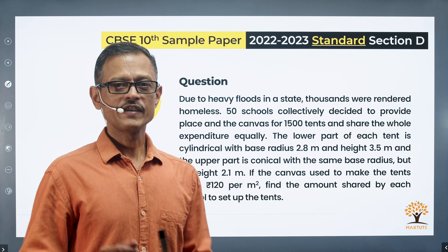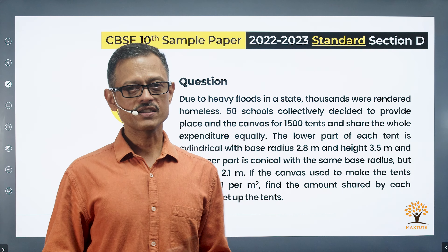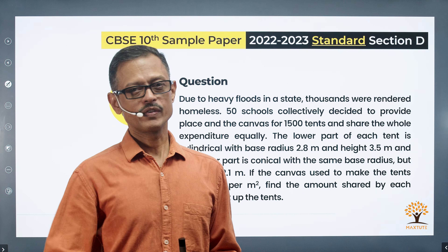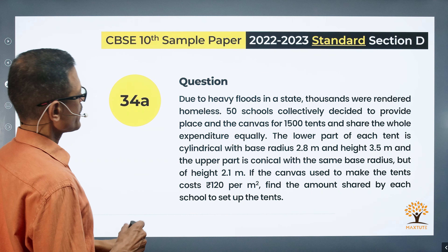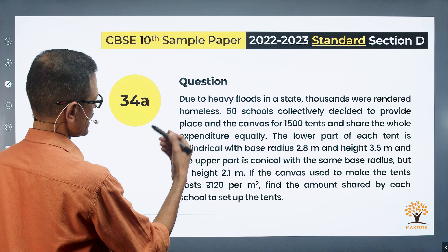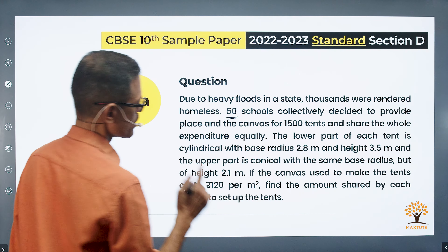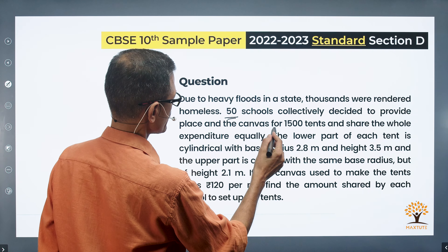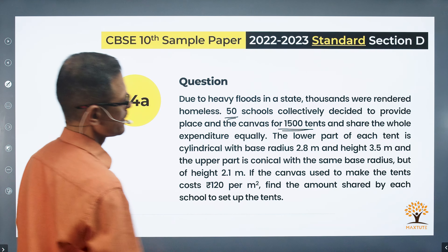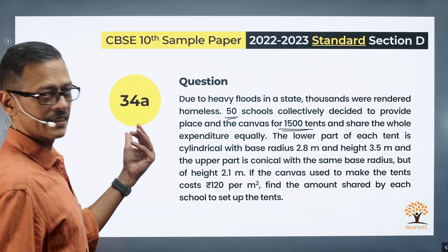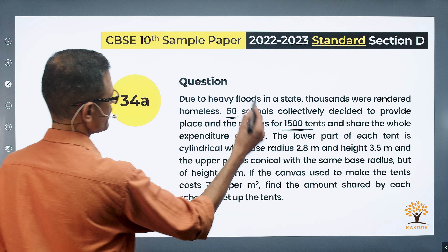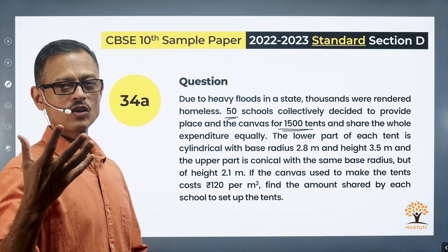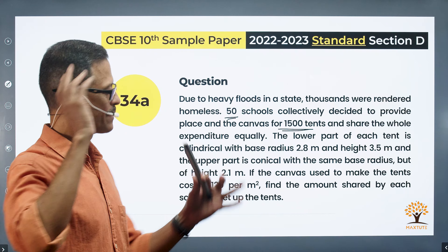Question 34: areas, surface areas, and volumes — both questions come from this topic. It has an internal choice, and the video solution to both parts is in this video. Call it 34A. Due to heavy floods in a state, thousands were rendered homeless. 50 schools collectively desired to place an order for 1,500 canvas tents and share the whole expenditure equally — so each school bears the cost for 30 tents.